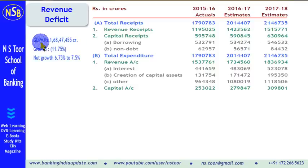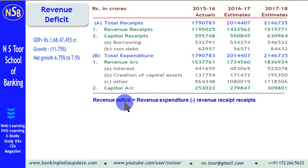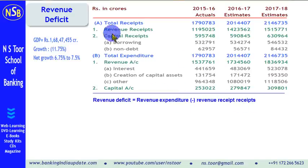GDP data — Gross Domestic Product — has also been given here to calculate revenue deficit as a percentage of GDP. This is the formula to be used for calculating revenue deficit: revenue deficit is equal to revenue expenditure minus revenue receipts.